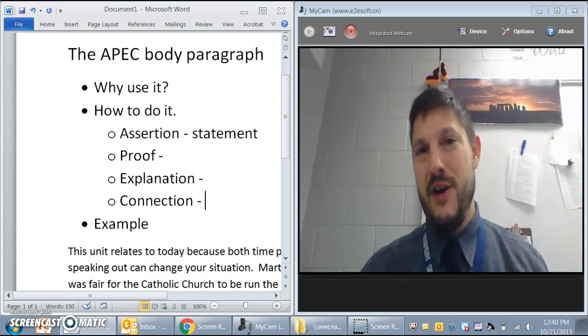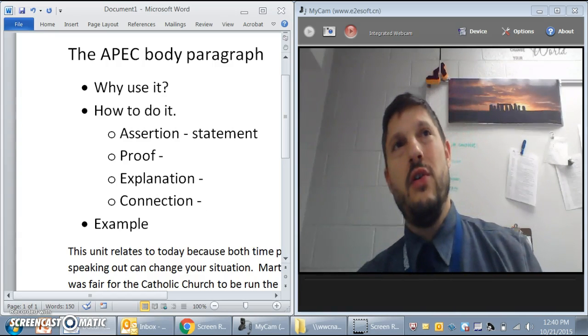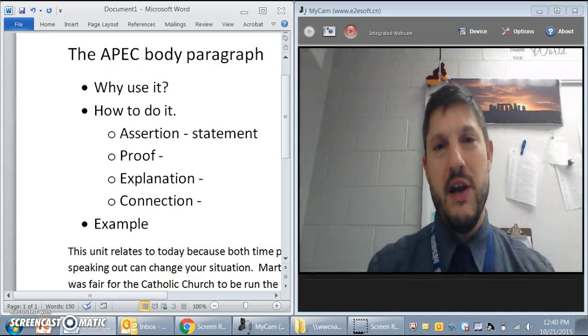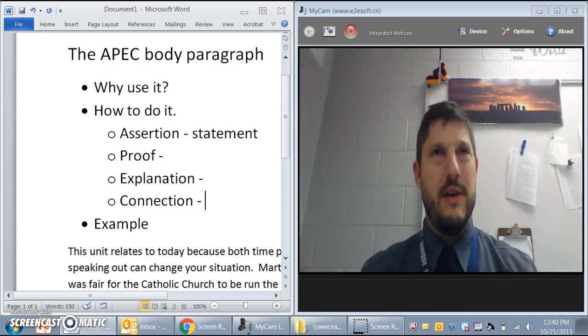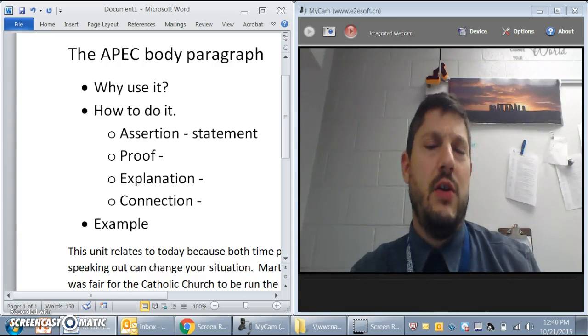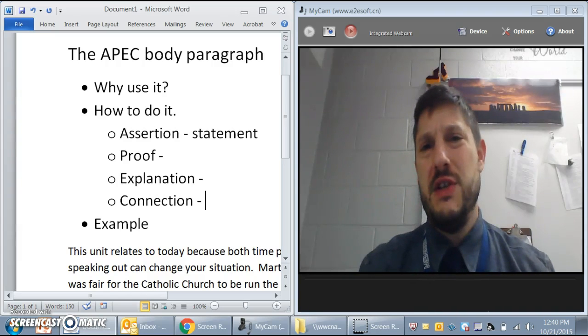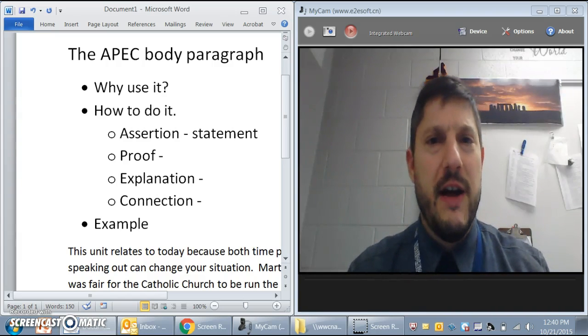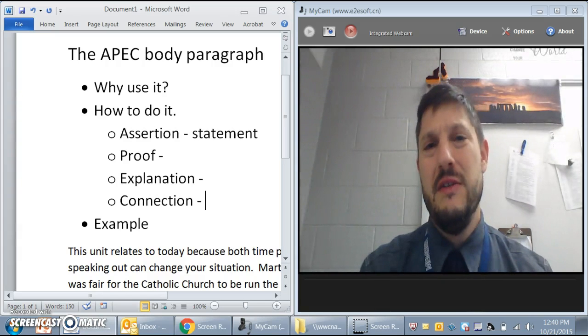And the connection is kind of fun because the connection is essentially just restating the assertion. So Babe Ruth is the best player is our assertion. Our connection is, you know, as you can see Babe Ruth was a truly special player or Michael Jordan because he was such an amazing champion is the best player ever. We're essentially rehashing our assertion. It's very easy, very simple.